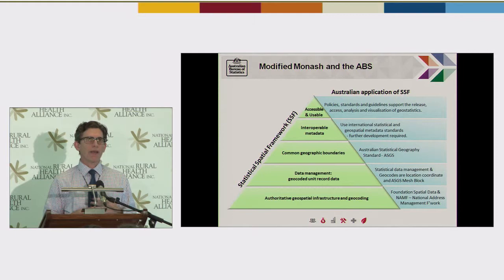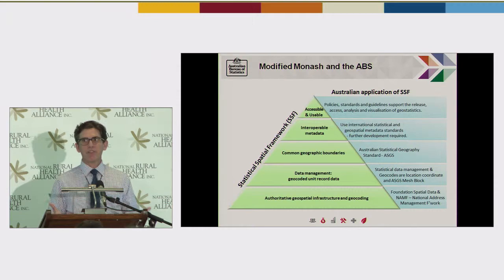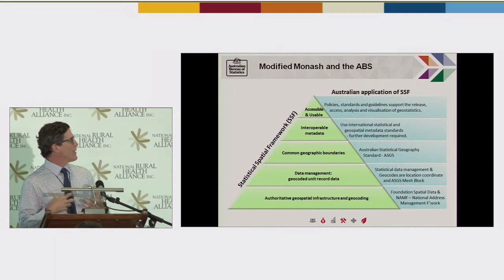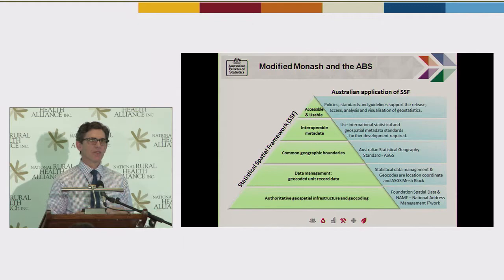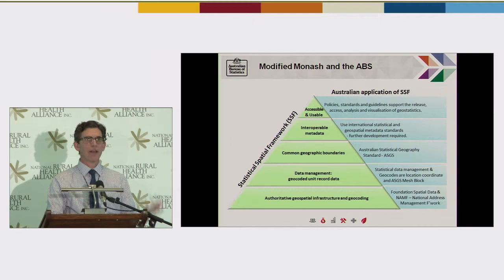David talked about some of the issues around geospatially enabling data and geocoding. The Statistical Spatial Framework is an ABS initiative where we're trying to encourage all data custodians to better geospatially enable their data. If we have better geospatial enablement, we get much better results for things like the Monash Model, but also for a range of geographies including Primary Health Networks. The SSF is something we've been working on with a range of departments and custodians to encourage a common approach to geospatially enabling data, and we've been encouraging administrative data collections to collect and use location address, not postal address.